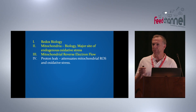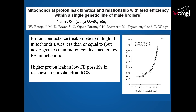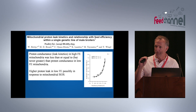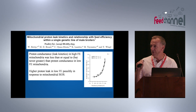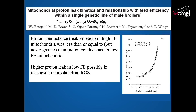Touching on proton leak: we did studies with proton leak kinetics and found that in all different situations, proton leak was less than or equal to, but never greater than, in the low feed-efficient mitochondria compared to high feed-efficient. This suggests that proton leak was being stimulated by the higher ROS production in low feed-efficient mitochondria.